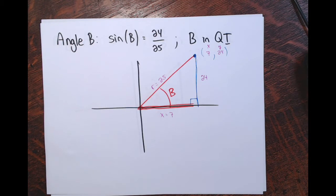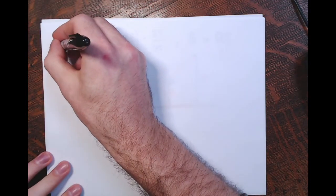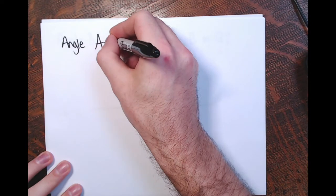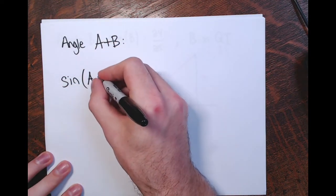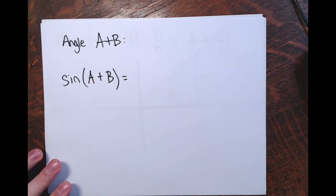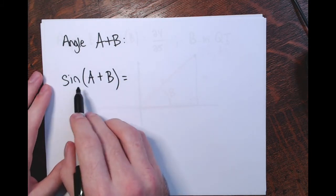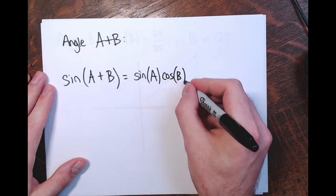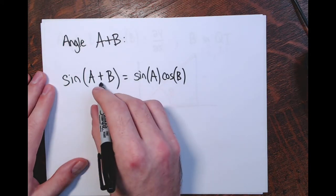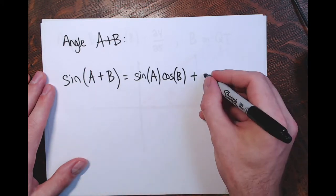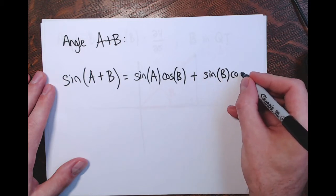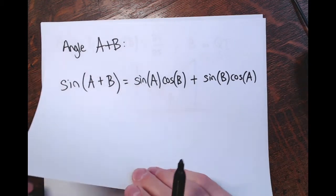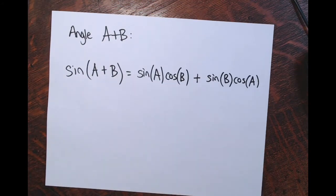Now we take angle A and angle B, add them together to make angle A plus B, and find the sine of this new angle. Recall the sine of a sum formula: the sine of A plus B equals the sine of the first angle times the cosine of the second angle — sine(A) times cosine(B) — plus the sine of angle B times the cosine of angle A. We need to find these four values using the pictures I've drawn.